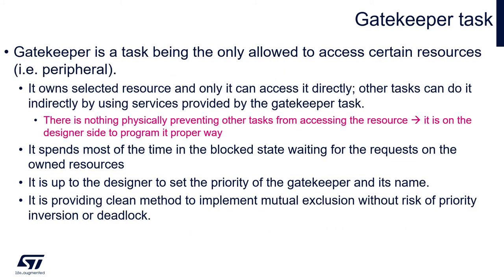The gatekeeper task is a concept which needs to be implemented by the designer. There are no dedicated functions or structures supporting it in the current FreeRTOS implementation. A gatekeeper is a task that is the only one allowed to access certain resources, like peripherals or memory buffers. Other tasks access those resources indirectly by calling gatekeeper services. This task should spend most of its time in a blocked state, waiting for access requests to the guarded resources. It is up to the designer to set the priority and name of this task. It provides a clean method to implement mutual exclusion without any risk of priority inversion or deadlock.